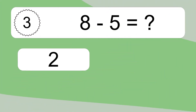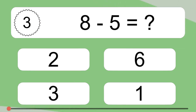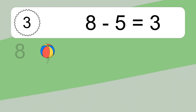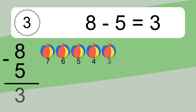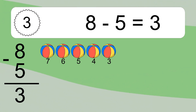8 minus 5 equals what? 8 minus 5 equals 3. Let's count it: 7, 6, 5, 4, 3.